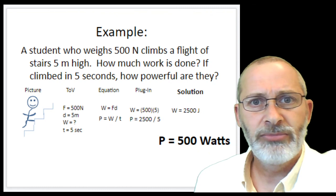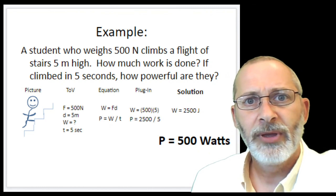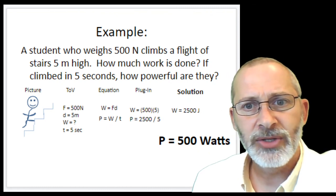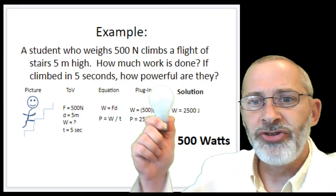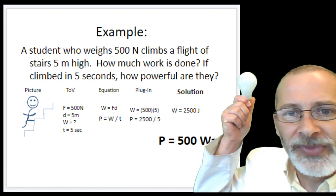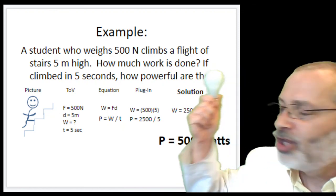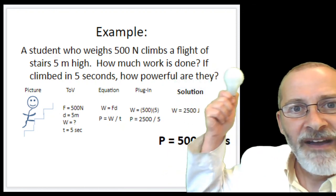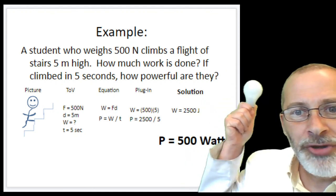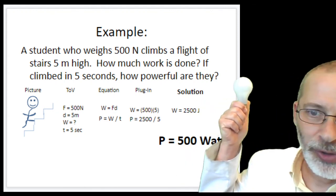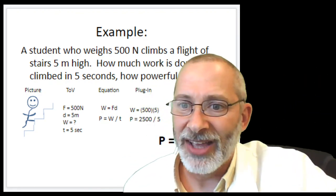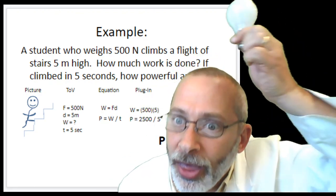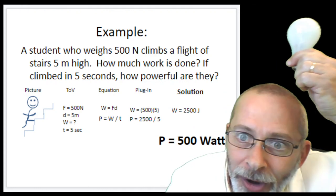Now, think about this for a minute. An individual student running up a flight of stairs that's five meters high. That's about two stories. Running up a flight of stairs in five seconds generates 500 watts of power. Or, you could light up five 100-watt light bulbs if you ran up a flight of stairs that fast. Think about that.